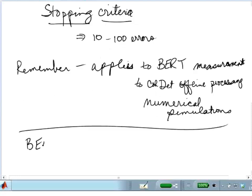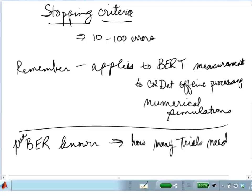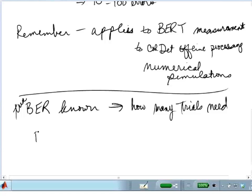If the true bit error rate was known, then I would have a pretty good idea of how many trials were needed. If I know that the bit error rate is about ten to the minus three, then if I did ten to the six trials, that would be way more than I need.